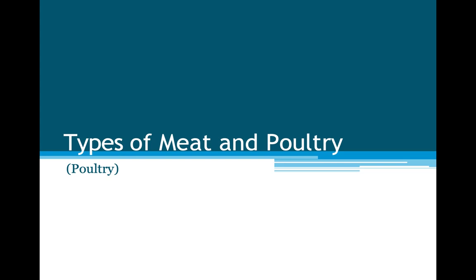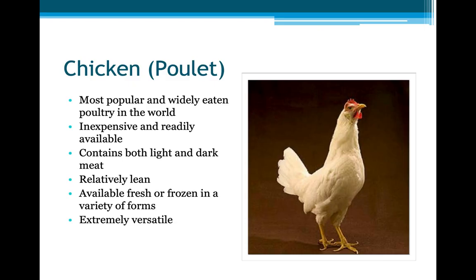Types of meat and poultry — Chicken: the most popular and widely eaten poultry in the world, inexpensive and readily available. It contains both light and dark meat, is relatively lean, and is available fresh or frozen in a variety of forms. It is extremely versatile.